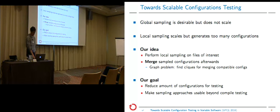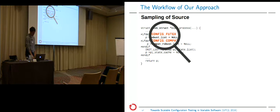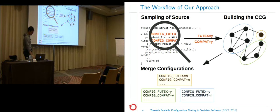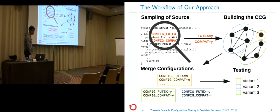The overall goal was to reduce the number of configurations needed for testing and to make it scalable beyond compile testing — we want to build software, not only compile it. The workflow looks as follows: we apply local sampling on the source code, build a graph (the configuration compatibility graph, CCG), find cliques in this graph, merge those cliques — which are configurations — to a smaller set of configurations, and then use those configurations to test our different variants.